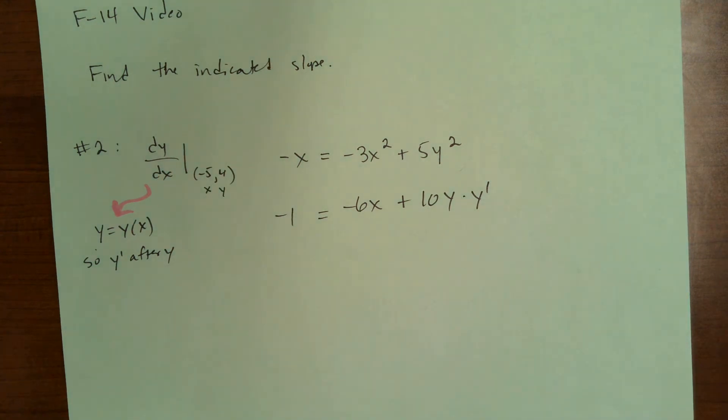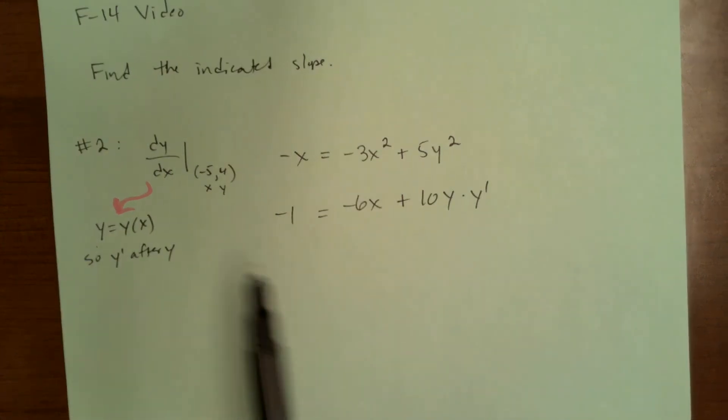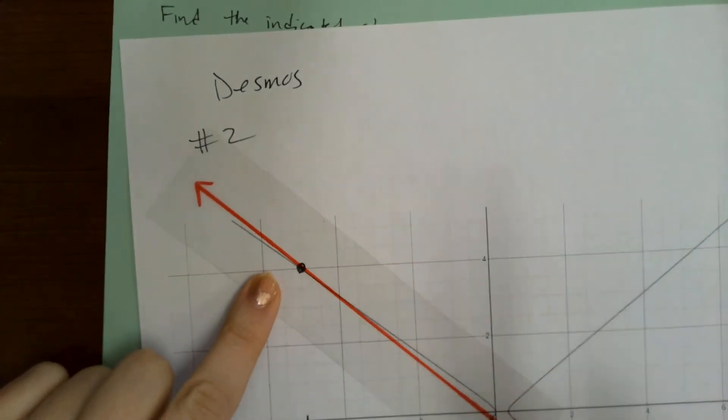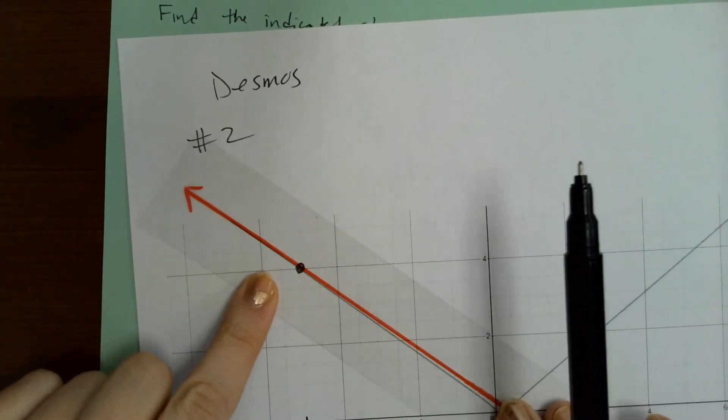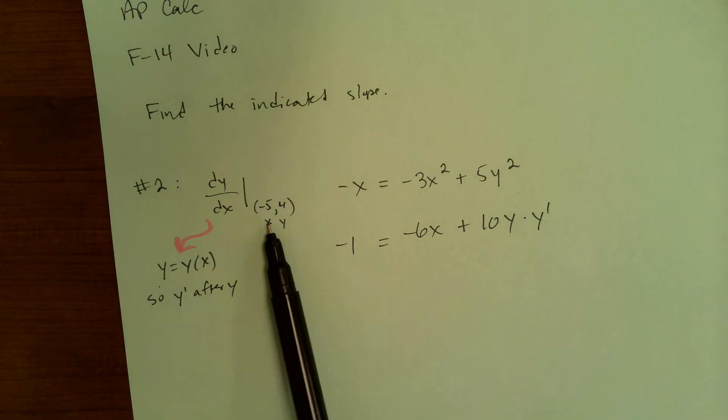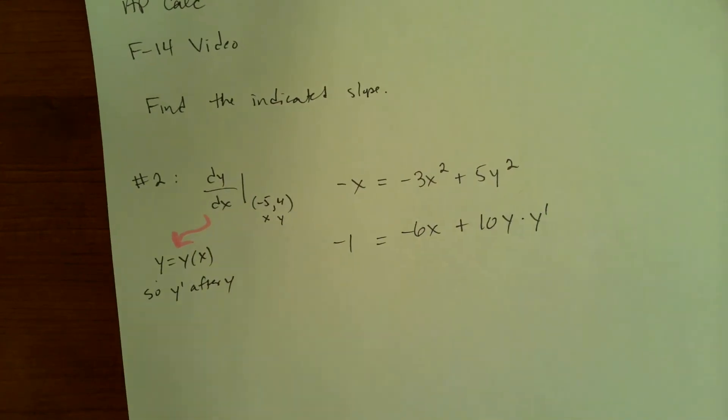Now here's the thing, guys, you're used to, in the previous phases at this point, solving for whatever prime. So you're used to solving for y prime at this point, you could do that. However, what they want us to do in order to find the slope of the tangent line to this point, or to find the slope of this tangent line, what we need to do is plug in negative five and four for x and y. You should do it right now and then solve for y prime. That tends to be a lot easier.